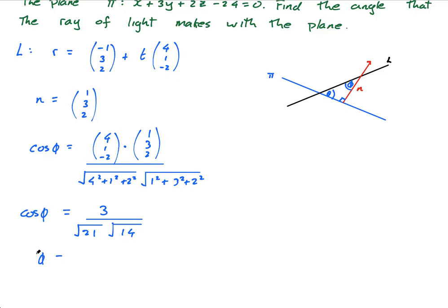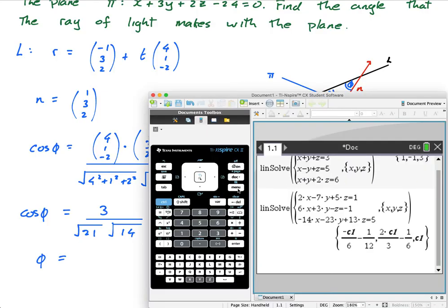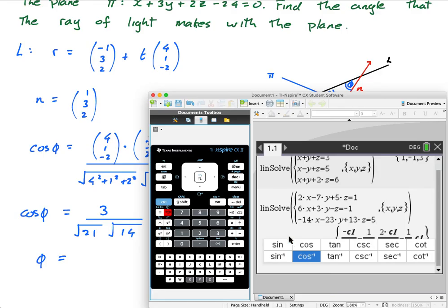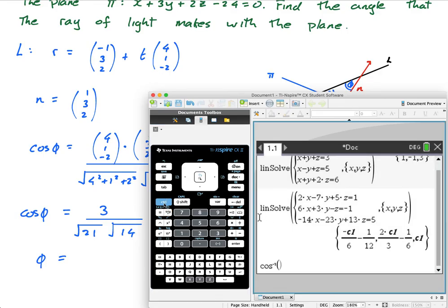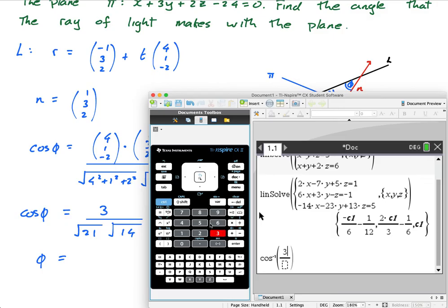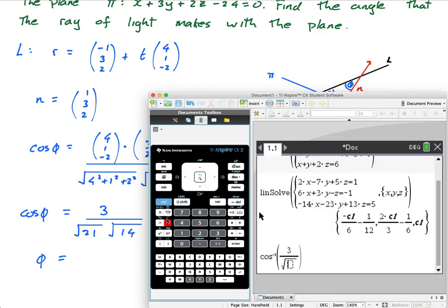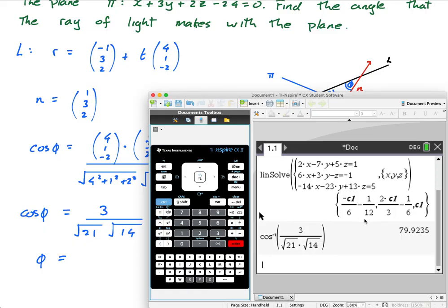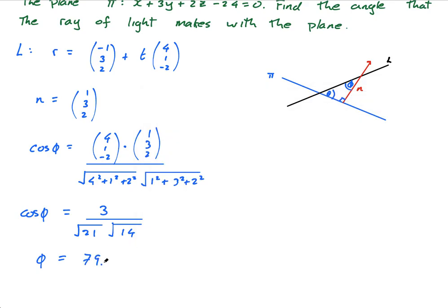So then phi is equal to the inverse cos. So I need to do this menu, trig, inverse cos. And I'm going to put this in just like I see it. So I have 3 over the square root of 21 multiplied by the square root of 14, press enter, and I get 79.9235, that's phi.